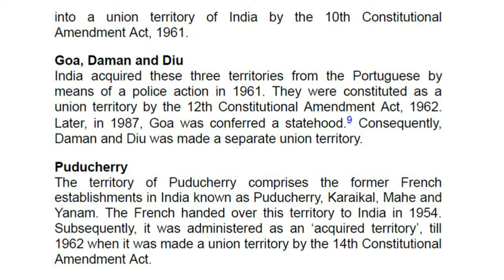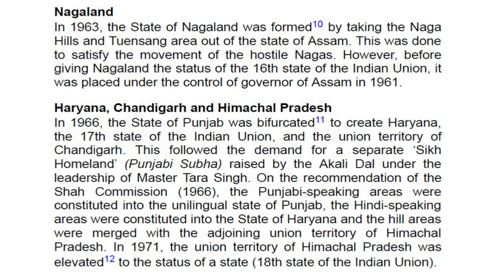Puducherry: The territory of Puducherry comprises the former French establishments in India known as Puducherry, Karaikal, Mahe, and Yanam. The French handed over this territory to India in 1954. Subsequently, it was administered as an acquired territory till 1962 when it was made a union territory by the 14th Constitutional Amendment Act. Nagaland: In 1963, the state of Nagaland was formed by taking the Naga Hills and Tuensang area out of the state of Assam, to satisfy the movement of the hostile Nagas. However, before giving Nagaland the status of the 16th state of the Indian Union, it was placed under the control of the Governor of Assam in 1961.